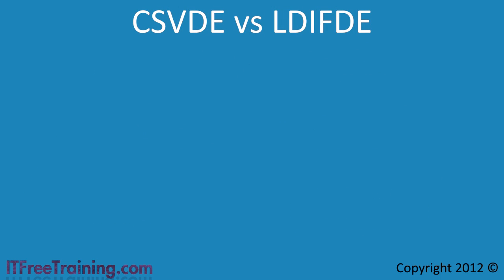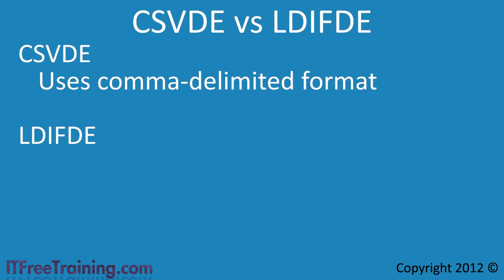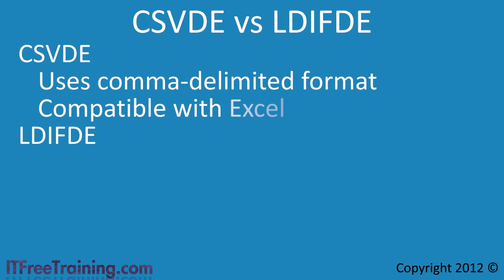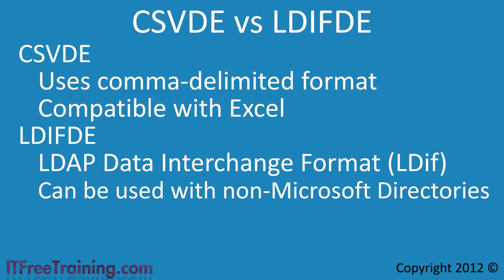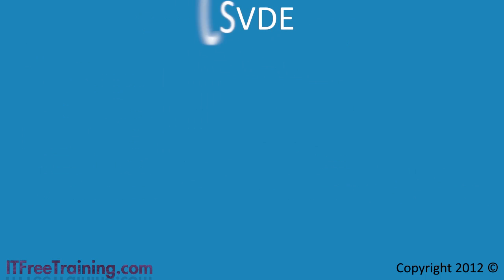I will begin with CSVDE followed by LDIFDE. The fundamental difference between the two tools is the format they use to import and export data. CSVDE uses comma delimited files that are compatible with software like Excel. LDIFDE uses the Lightweight Directory Access Protocol Data Interchange Format, otherwise known as LDIF. Using the LDIF format you can export Active Directory users and import them into other non-Active Directory based systems. I will now look at the CSVDE tool.